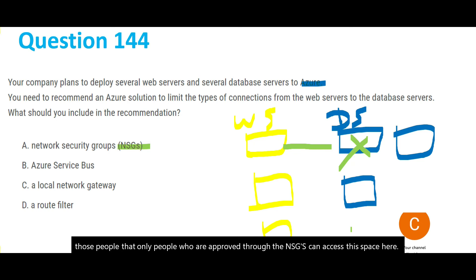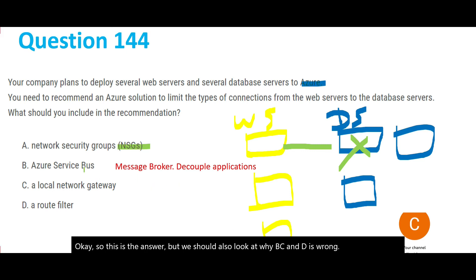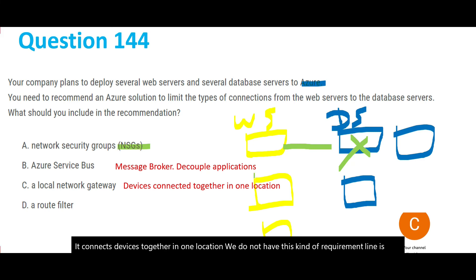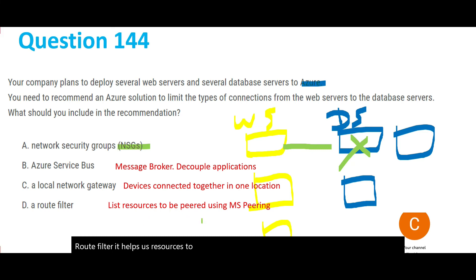We should also look at why B, C, and D are wrong. Service Bus — anything with 'bus' in the name is a message broker service used to decouple applications in a microservices-style application; nothing to do with this requirement. LAN connects devices in one location — that kind of security is already there. And Route Filter helps you list resources to be peered using Microsoft peering. So NSG is my final answer.